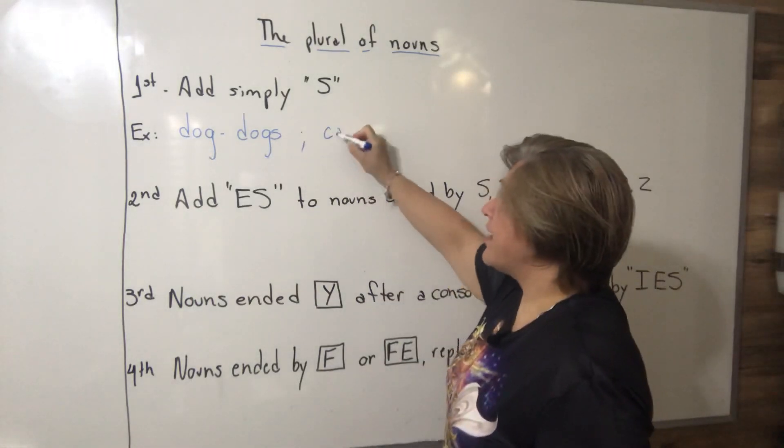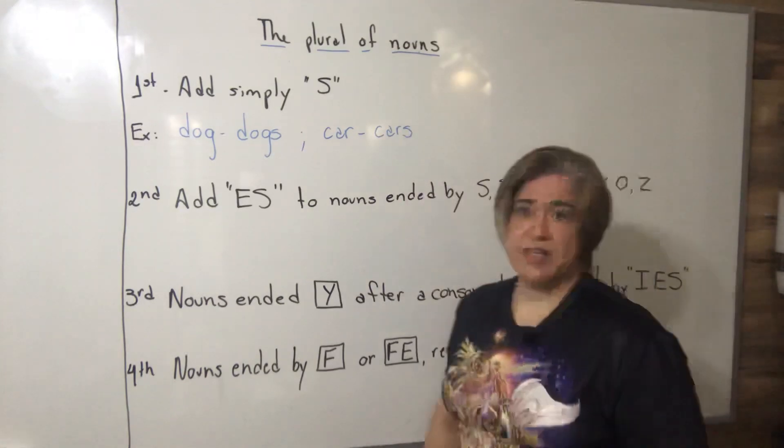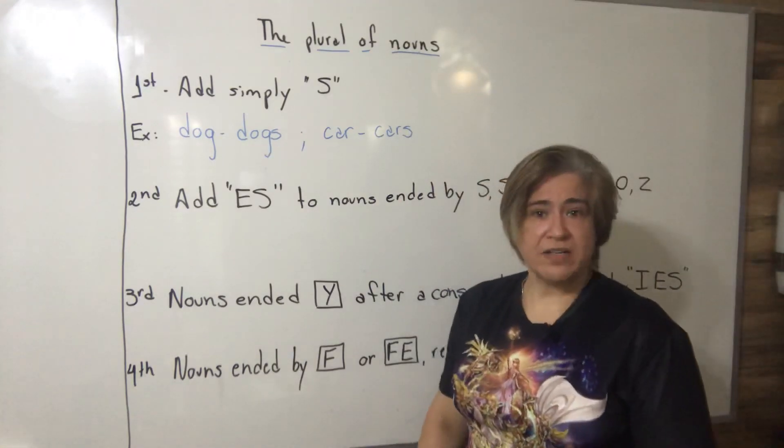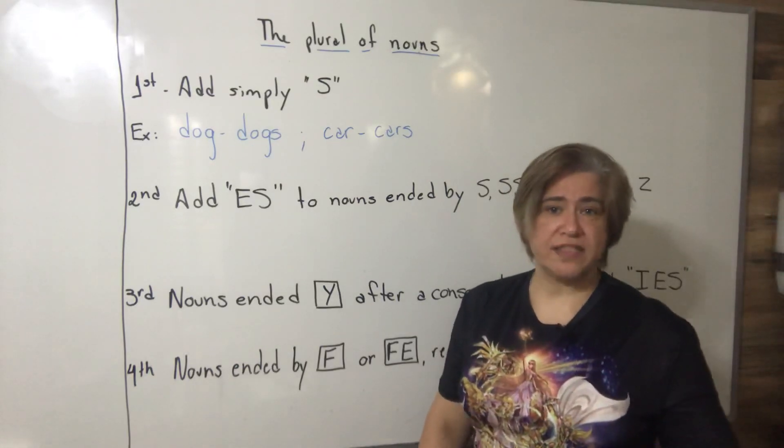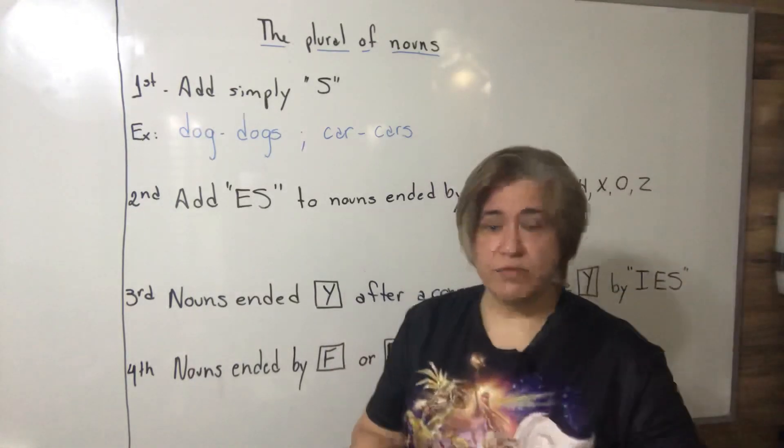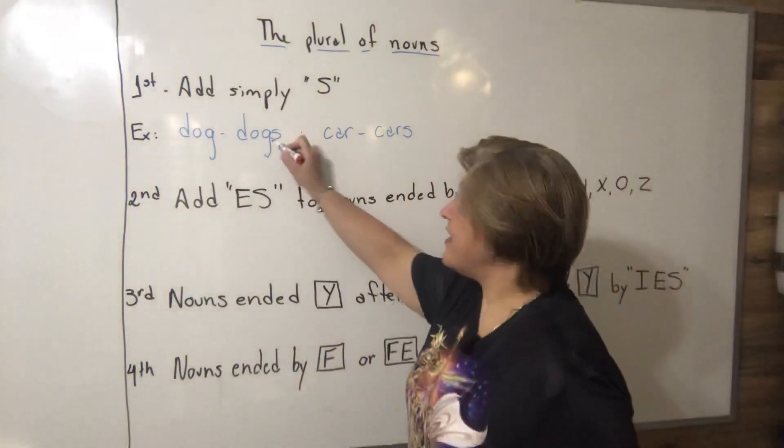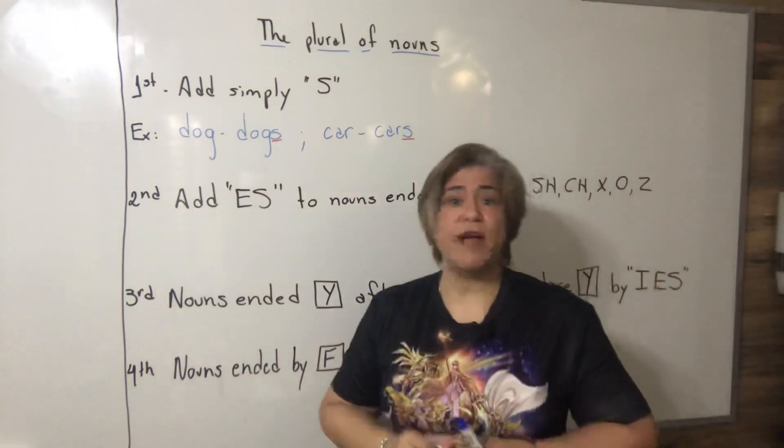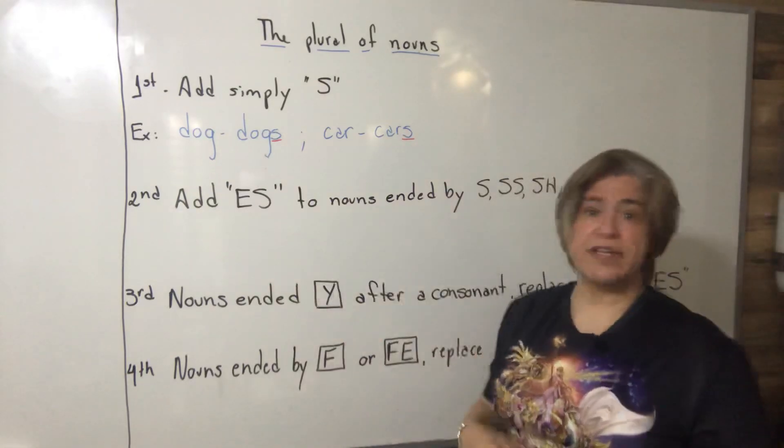We have, for example, car and the plural is cars. Some cars are stopped on that street. So the first rule says that you have to add S to the noun and you have the plural.